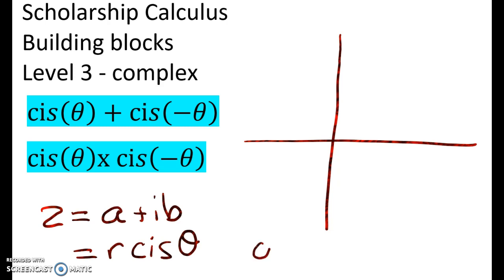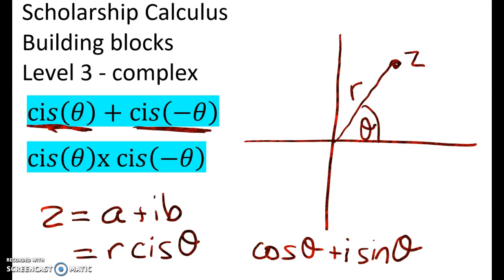Now cis in maths means cos of theta plus i sine theta. And geometrically what this means is that we can write this complex number z as having a modulus of R and an argument of theta. And what we're going to look at here is what happens if we add cis theta plus cis of negative theta.